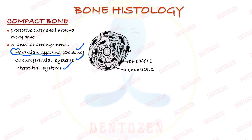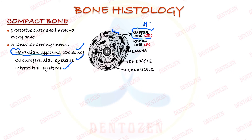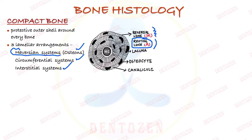So we have the osteocyte, its canaliculi, its lacuna, and the outer boundary of the system — a line called the reversal line. The reversal line is where the osteoclast cell has resorbed bone and stopped. Because osteoclast activity produces irregular boundaries, this line is also irregular and appears hematoxylinophilic or basophilic (blue) under H&E sections. It should be distinguished from the resting line — also blue under H&E — but the resting line is regular, while the reversal line is irregular. The resting line forms when the osteoblast cells pause during bone formation.